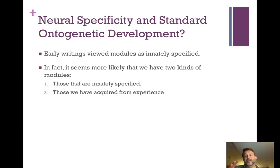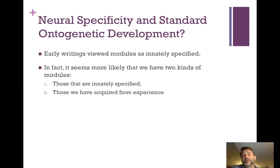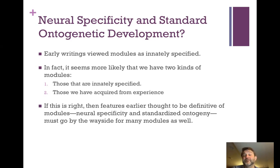These kinds of traits all look like paradigmatically modular systems, but they're not innately specified. Some people have a part of the brain that allows them to ski down mountains; some don't — it's something some people have acquired and others haven't. There's not a specific skiing part of the brain that's neurally specified across people, and it doesn't develop standardly as an organism grows. So neural specificity and standard ontogenetic development look less promising as real concrete features for modules, and features earlier thought to be definitive of modules must go by the wayside for many modules.